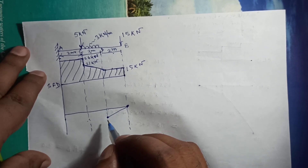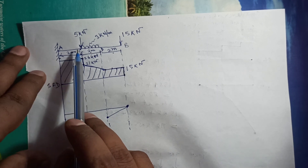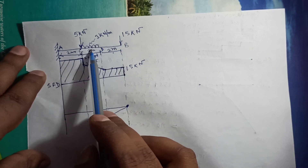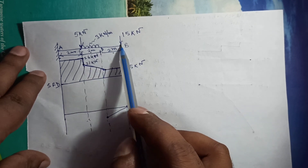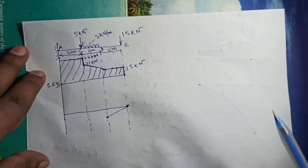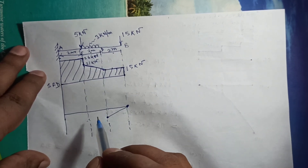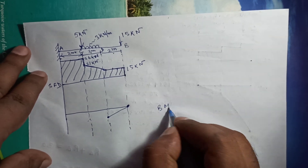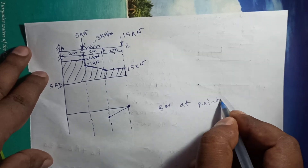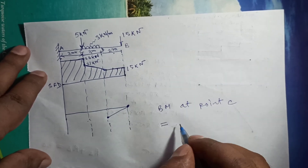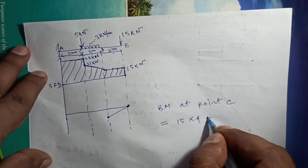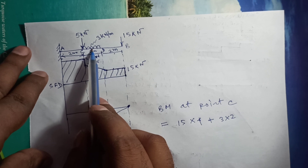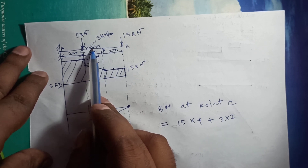At point C, there are two forces: the UDL of 3 kilo Newton per meter and the 15 kilo Newton point load at a distance of 4 meters from C (2 + 2 = 4). The bending moment at C = 15 × 4 plus the UDL contribution = 3 × 2 (total UDL load) multiplied by the distance from C to the midpoint of the UDL.